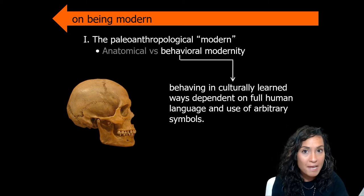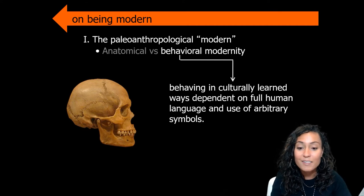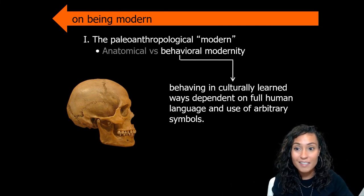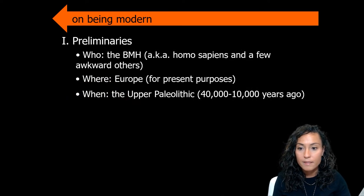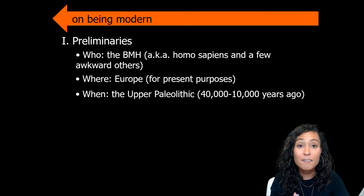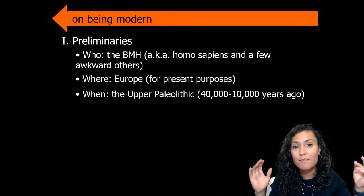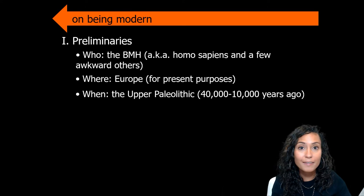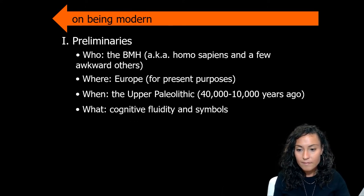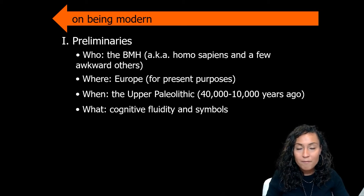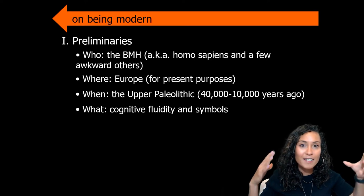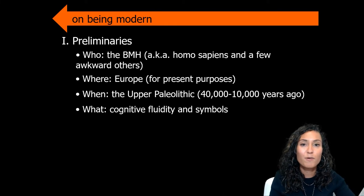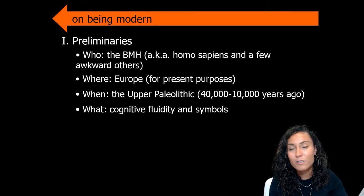Behavioral modernity is also linked to the capacity for spiritual thought, meaning our hominin ancestors were moving beyond just thinking about food and technology. This transition to being behaviorally modern is defined by a critical breakdown of what we might think of as our intellectual walls, or what Stephen Mithin has called cognitive fluidity, a transition associated with the Upper Paleolithic around 40,000 years ago.